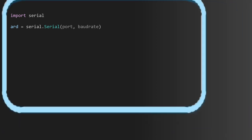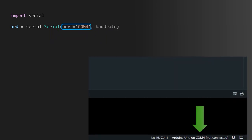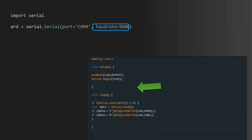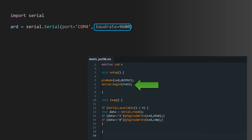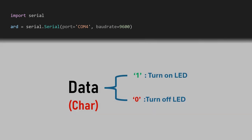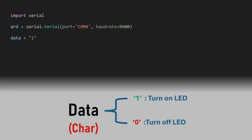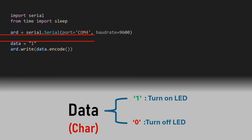In the Serial() arguments, we have port and baud rate. Put the port of your Arduino — open Arduino IDE and you'll find it at the bottom. For the baud rate argument, put the same serial communication speed as Arduino. To turn on the LED, create a variable containing the character '1' — for example, 'data'. Send it with 'arduino.write(data.encode())'. Import sleep from time to add a delay between initialization of the Arduino port and the data to send.